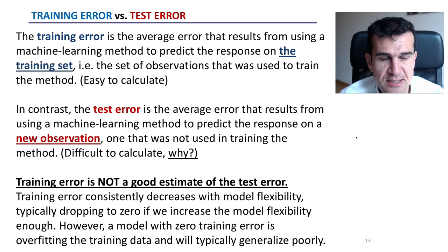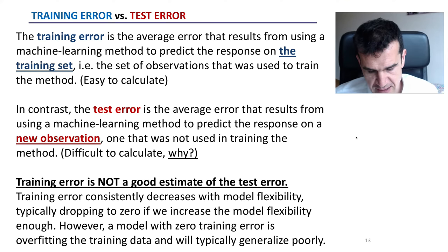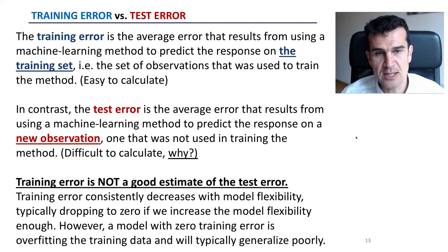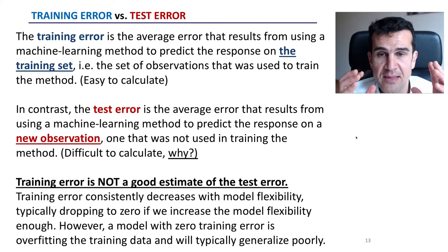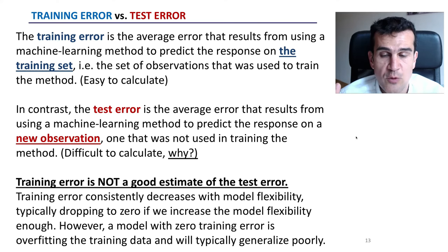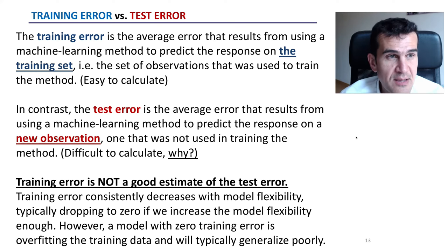The test error is a very different thing — it is the average error that we have when we use a model on new data, on data that the model has never seen. This is the error that we want to minimize, because in machine learning we build models to make predictions on new data that the model has never seen before and has not been used in training.